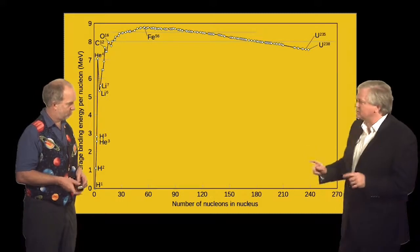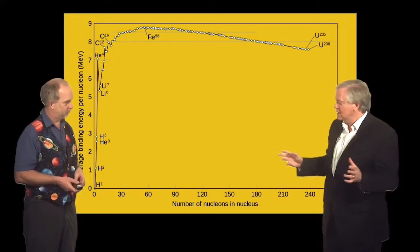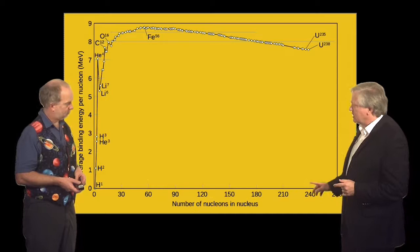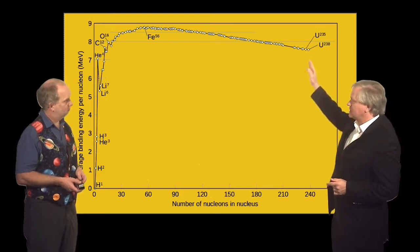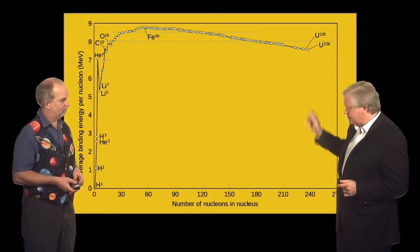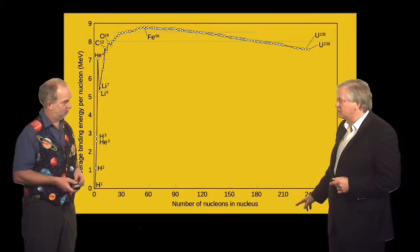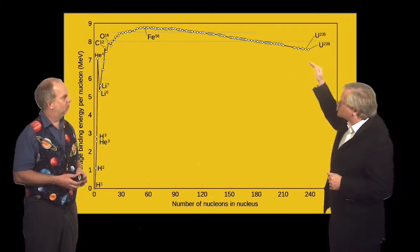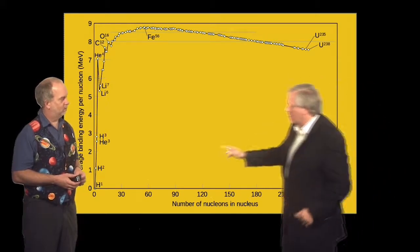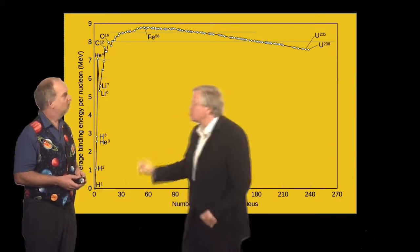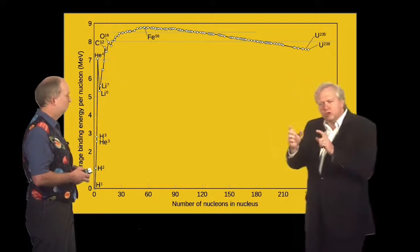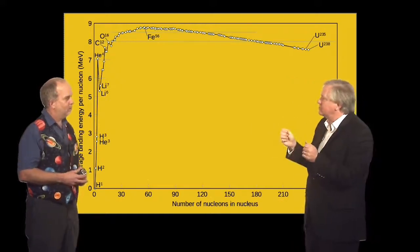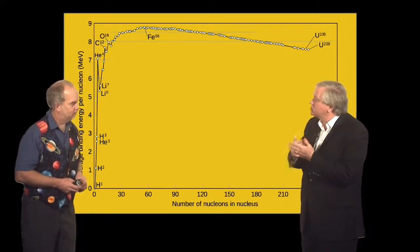So this diagram does it for all of the elements, and what we're plotting here is the mass of an atom divided by the number of nucleons, so that's protons and neutrons, so that's the mass, and we're subtracting that mass from the mass of hydrogen. So we're looking at how much per nucleon it weighs less than hydrogen, and that tells you how much energy you're gonna get out.